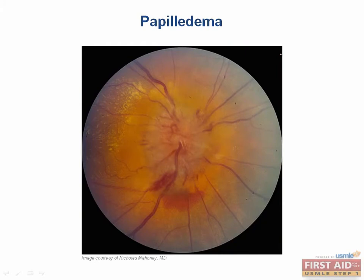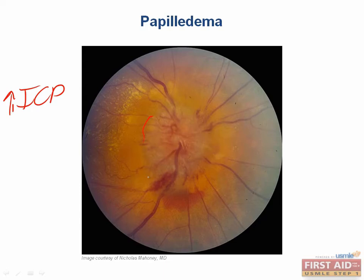Papilledema is a sign seen on fundoscopic exam of increased intracranial pressure. When you look through a fundoscope, the optic disc margin is blurry, as you can see here. Increased intracranial pressure usually presents with headache, blurry vision, and cranial nerve 6 palsy, but to establish the diagnosis you must use fundoscopy.